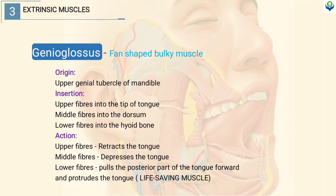Genioglossus is a fan-shaped bulky muscle which originates in the upper genial tubercle of the mandible. It has three fibers: upper, middle and lower. The upper fibers insert into the tip of the tongue, the middle fibers insert into the dorsum of the tongue, whereas the lower fibers insert into the hyoid bone. The upper fibers retract the tongue, whereas the middle fibers depress the tongue. The lower fibers pull the posterior part of the tongue forward and protrude the tongue.